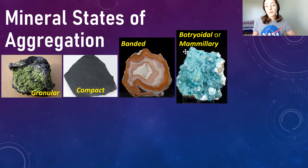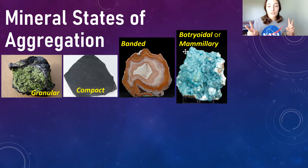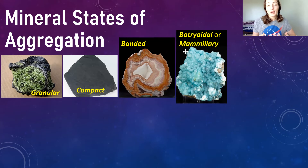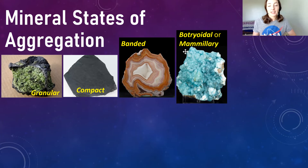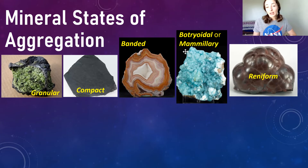Then we have botryoidal or mammillary states of aggregation. Botryoidal comes from the Greek meaning 'cluster of grapes,' and that's kind of how these minerals look. Mammillary actually translates to the Latin word for breasts, and the only difference between the two is that botryoidal is on a smaller scale than mammillary.